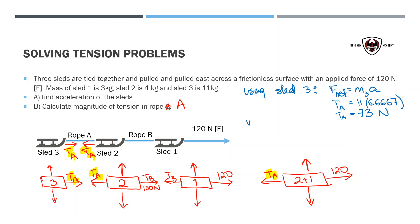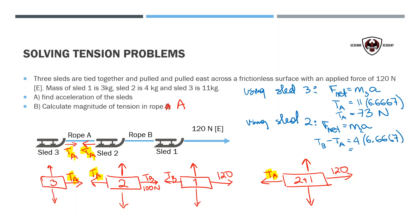Method 2: using sled 2. For sled 2, I have to use the tension in rope B I already found. Force net equals mass 2 times acceleration. The net force on sled 2 is tension B minus tension A, which equals 4 kilograms times 6.667, giving 26.68. I already know tension B is 100 newtons, so: 100 minus tension A equals 26.68, therefore tension A equals 73 newtons. Same answer.